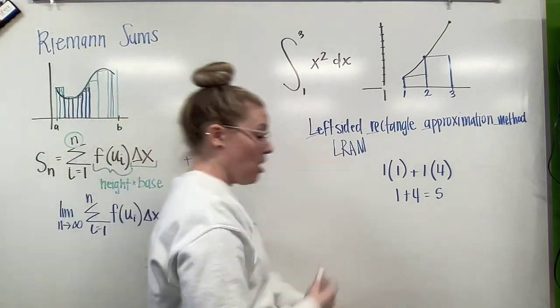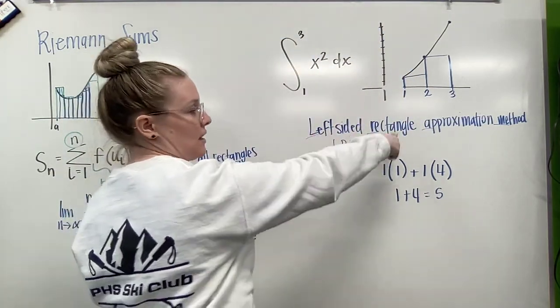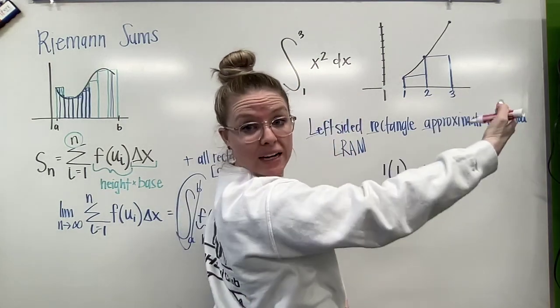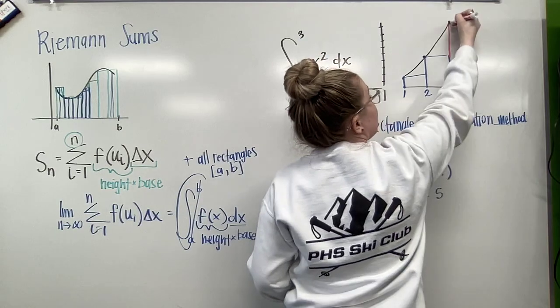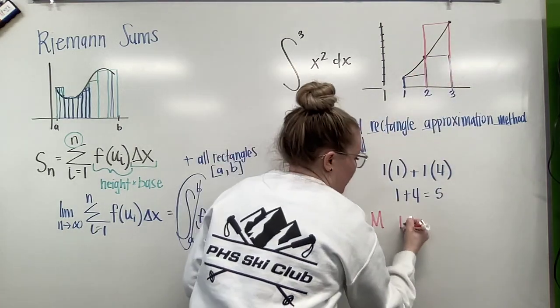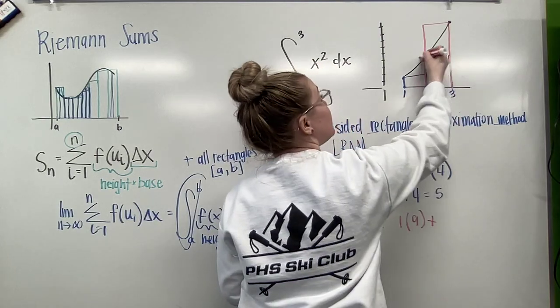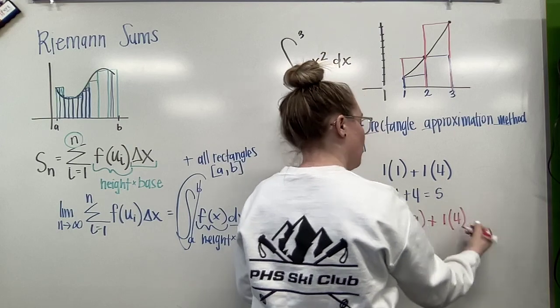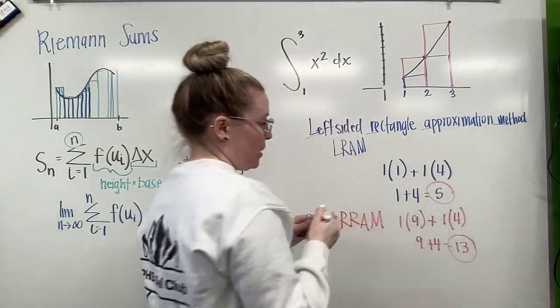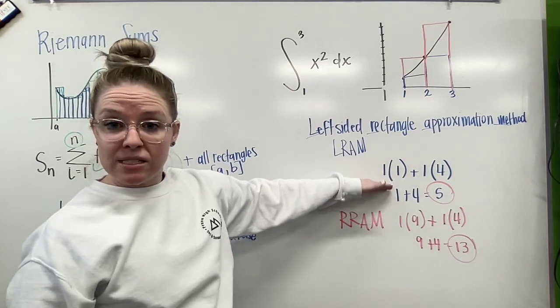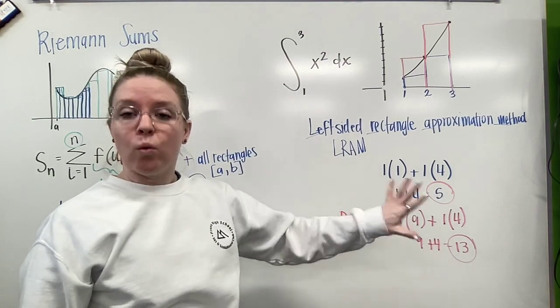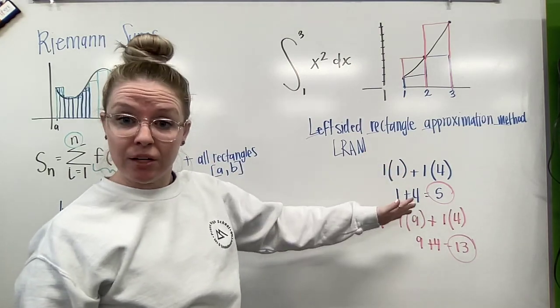So if I come in and I do a R-RAM, which is a right-sided rectangle approximation method, we're going to start from the right side of our graph. So I'm coming in to the right side and I'm going to build this rectangle. So we have a base of one and a height of nine. And my second rectangle has a base of one and a height of four. So nine plus four, we get 13. So I can see here that my lower end is approximating five. My upper end is estimating 13. So somehow in there, we're going to see our real area under the curve. It's between five and 13.